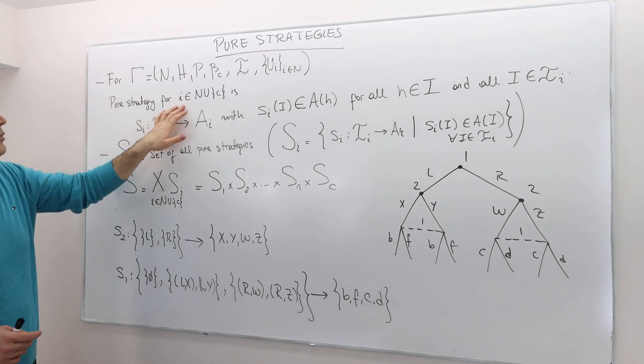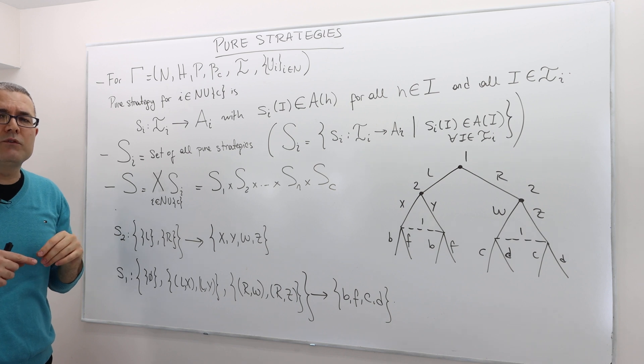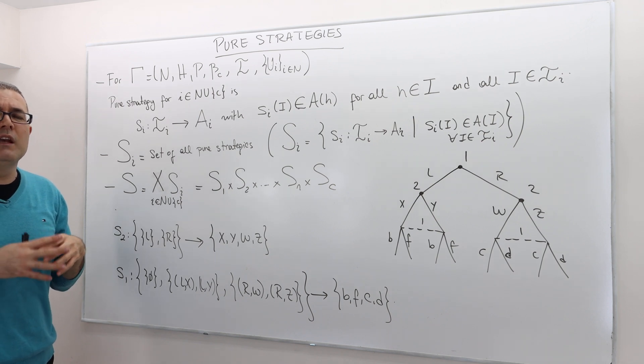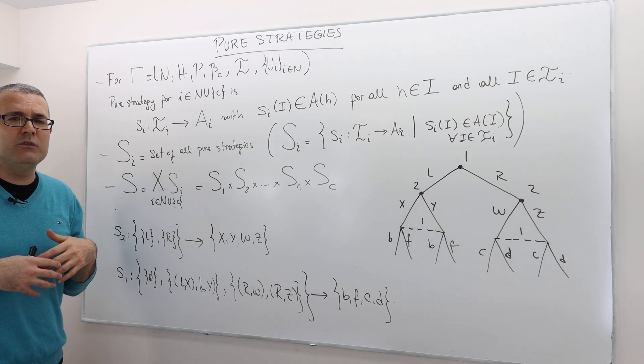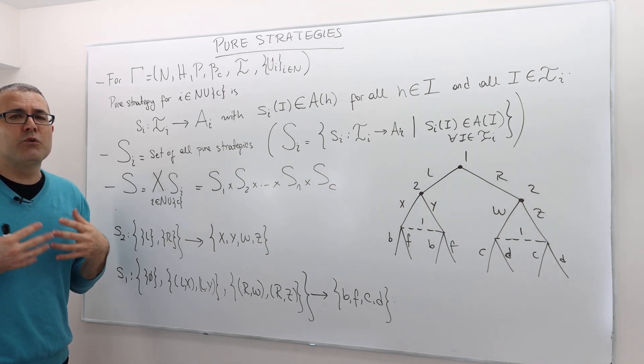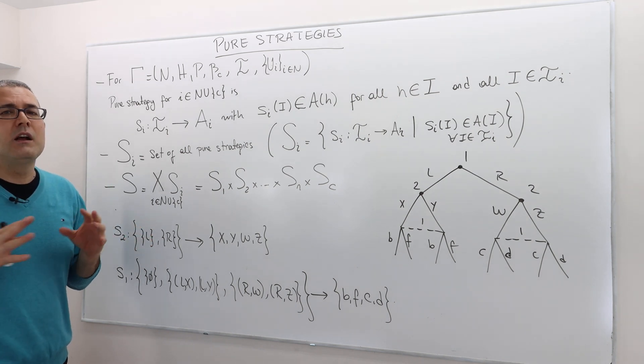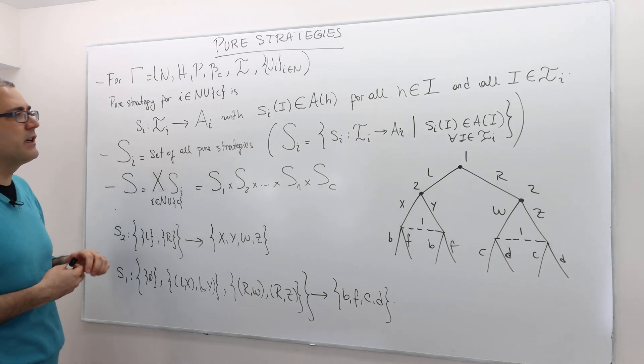The pure strategy for any player I, including the nature. Nature is not a player, but we are going to treat it as if it is a player when we construct strategies, because later when we calculate expected payoffs, those strategies are going to be incorporated. The nature's strategies are going to be incorporated into the utility function, and so it's going to make our notations easier. So for that reason, keep in mind, nature is not a player, but we are nevertheless going to include it as if it is a player, at least when we give the mathematical notations.